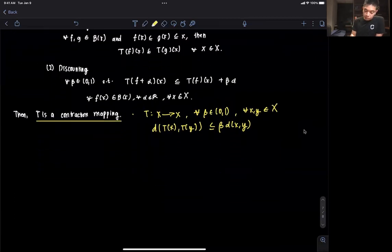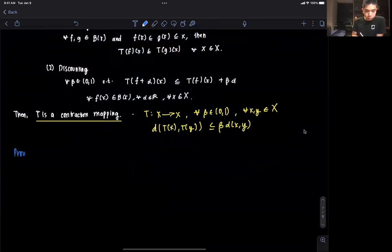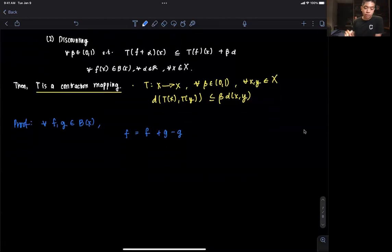So let's now give a proof for Blackwell's sufficiency theorem. We start with two bounded functionals in the set of bounded functionals, say f and g. It's obvious that f equals f plus g minus g. This is just a fancy manipulation. I'm adding and subtracting g, doesn't change anything.